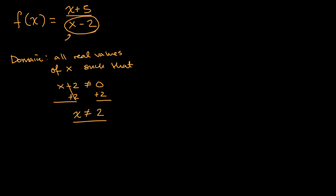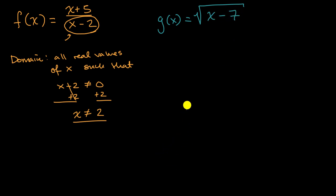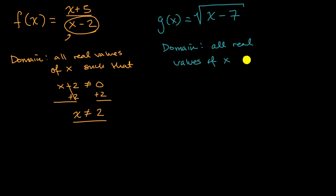Let's do another example. Let's say that we're told that g of x is equal to the principal root of x minus seven. What's the domain of g of x? Well, when does a principal root function break down? If we tried to find the principal root — the square root — of a negative number, that would break down.